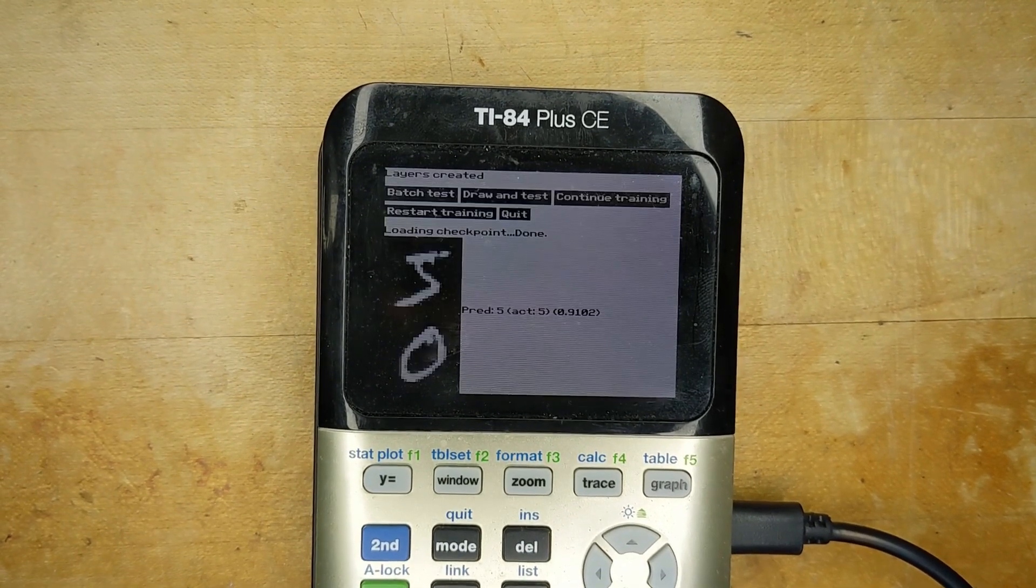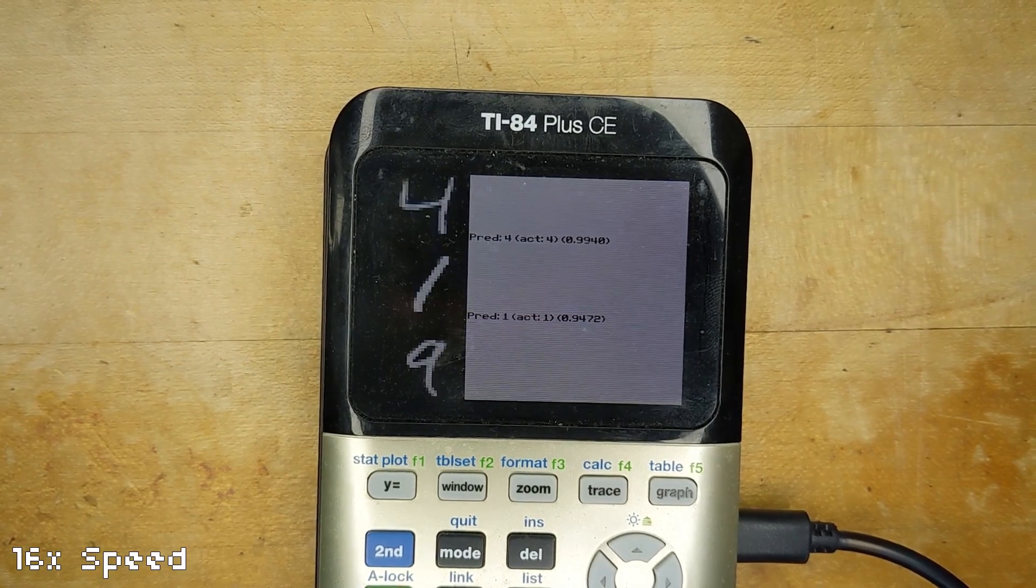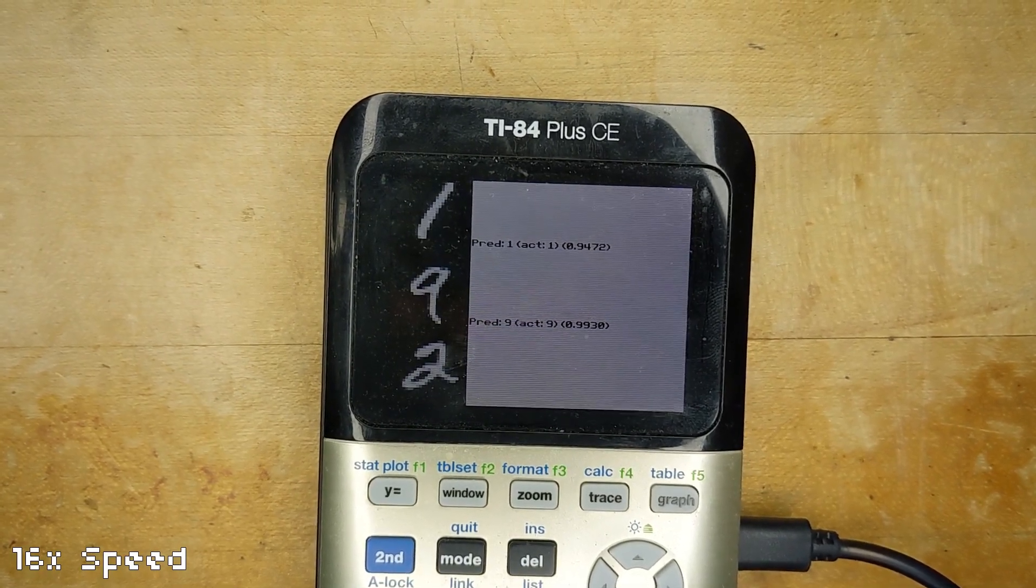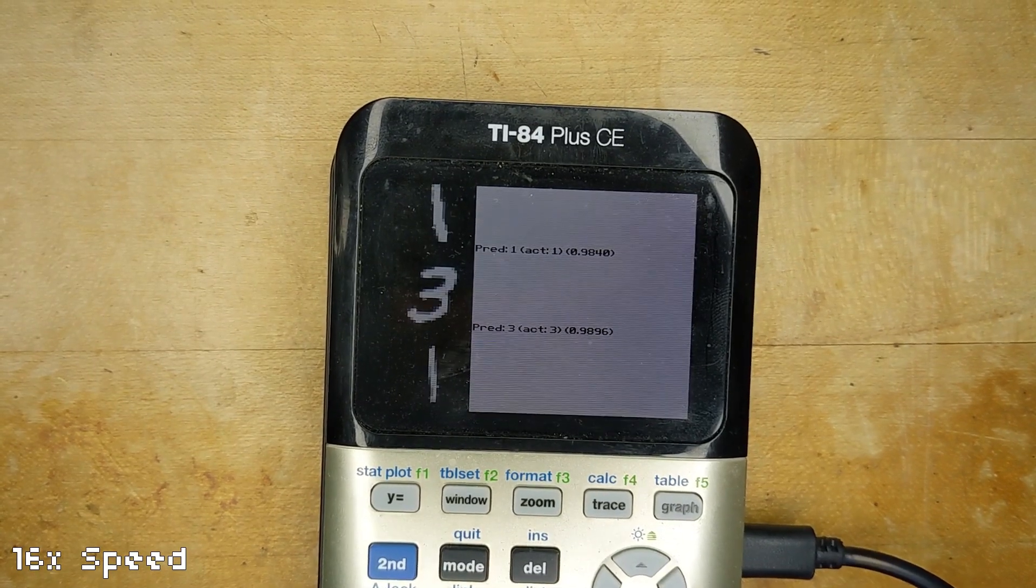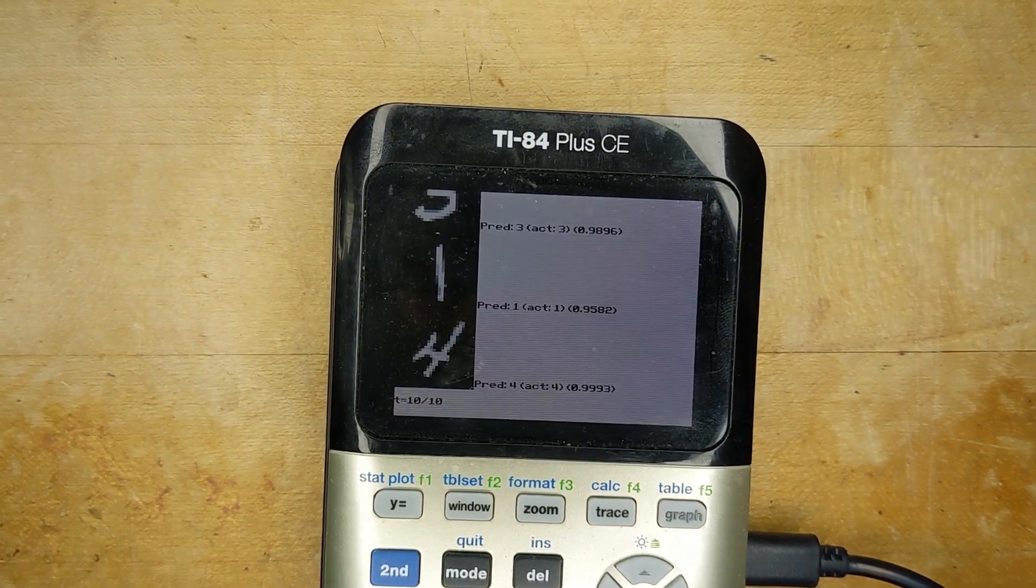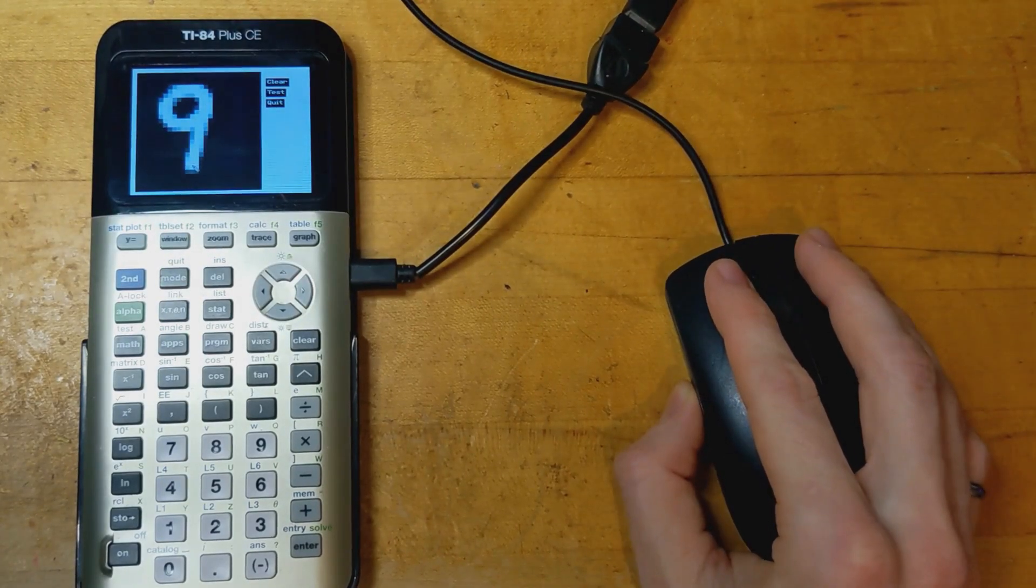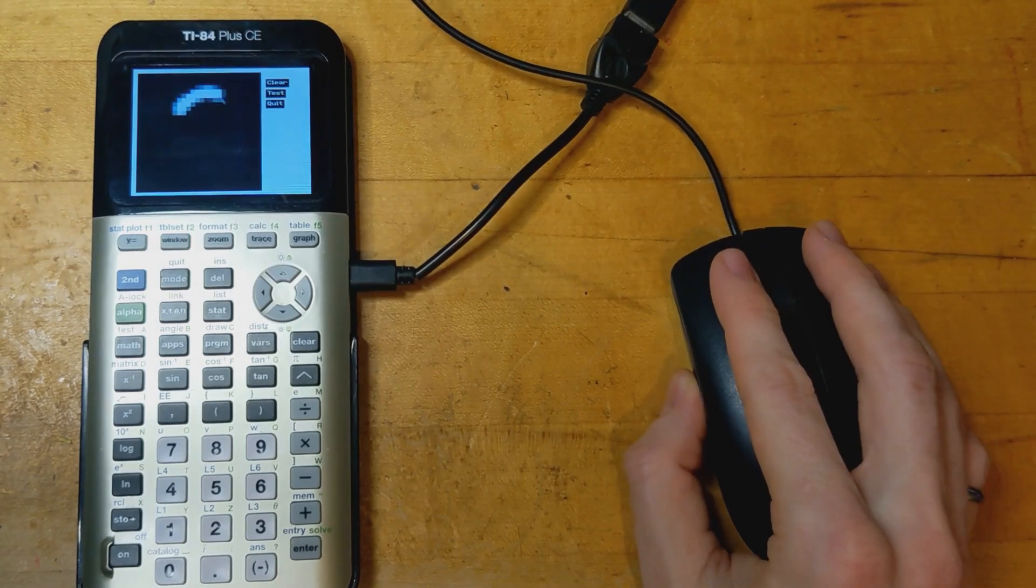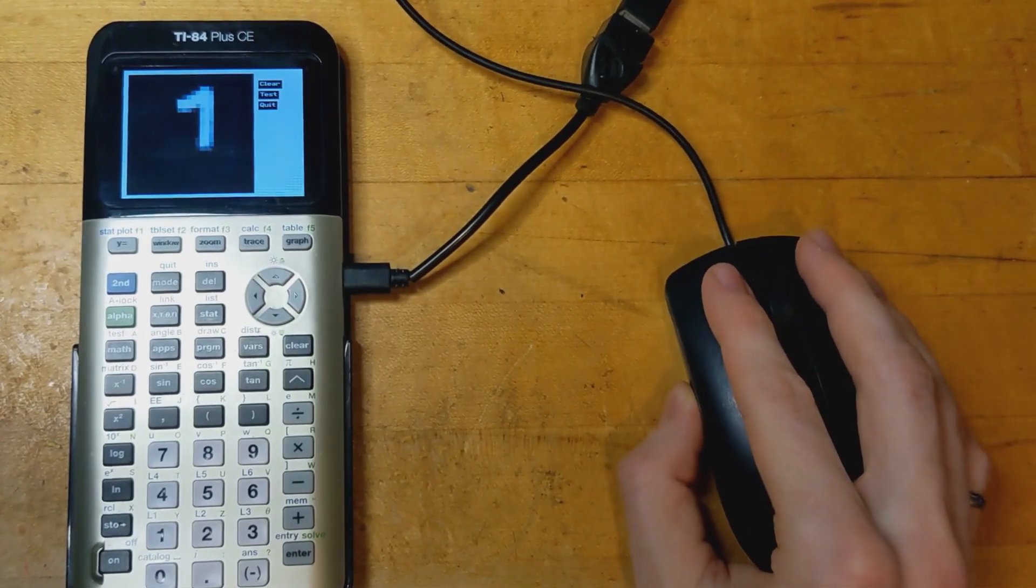Finally, I could test the network, first by using samples from its own MNIST training set. I wanted to show that it's really recognizing digits on the calculator, so I connected a USB mouse and added drawing routines so a user can draw a digit. Thanks to CommandBlockGuy and the rest of the community for the USB libraries and indeed the C toolchain that made this possible and saved me from having to write this program in EZ80 assembly language.